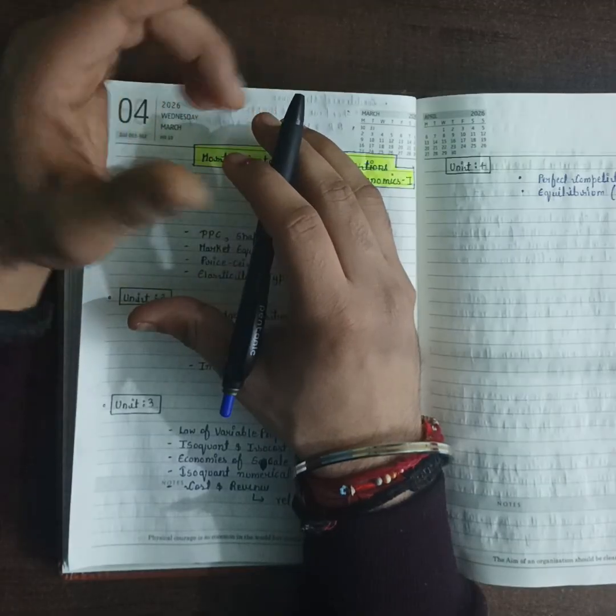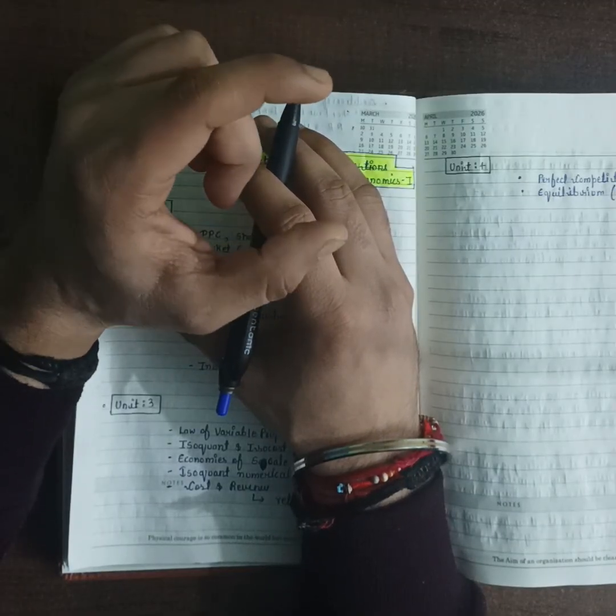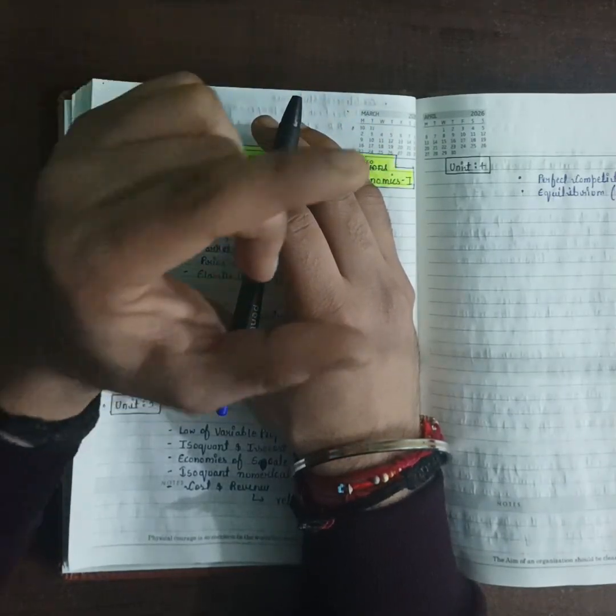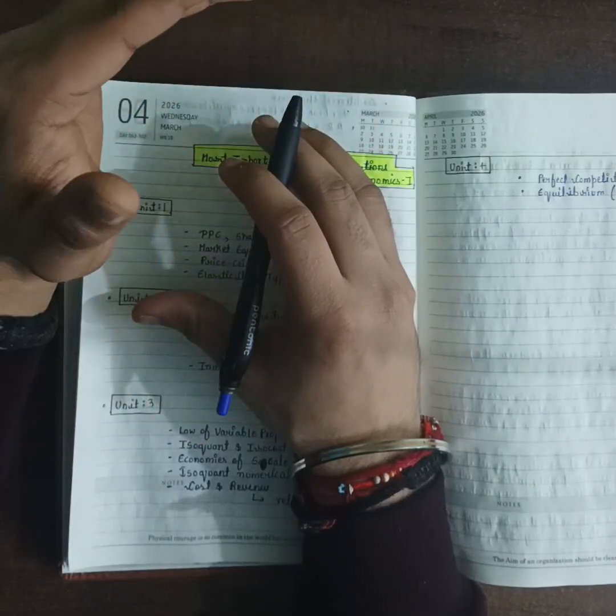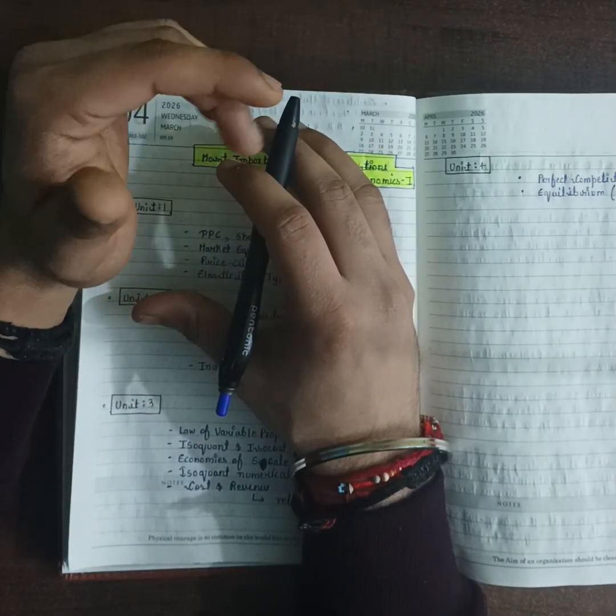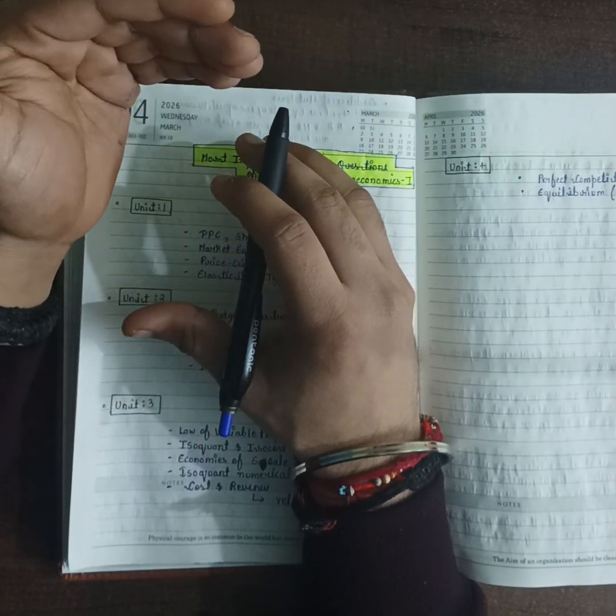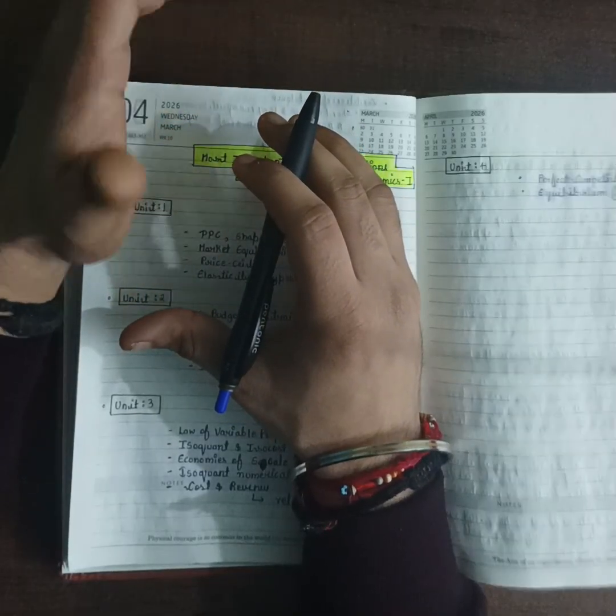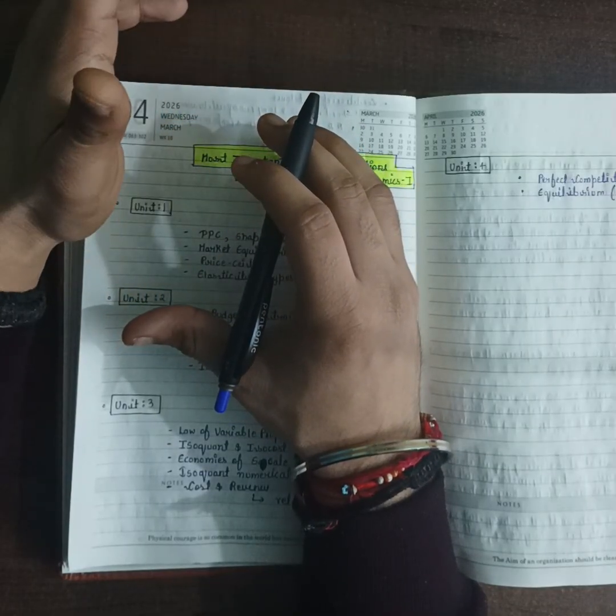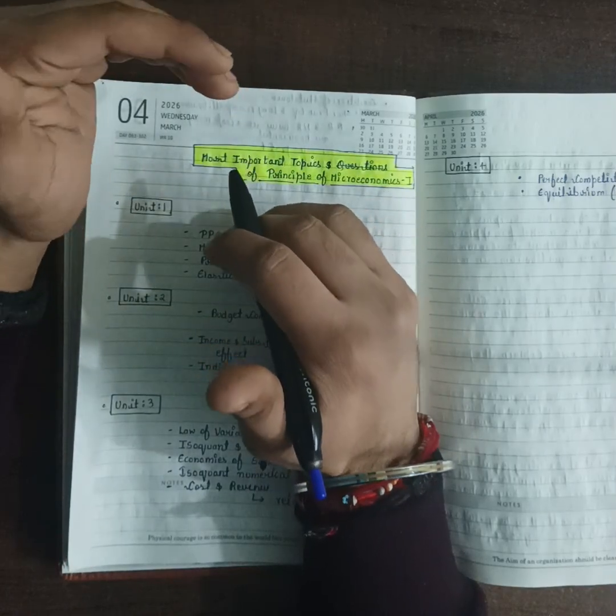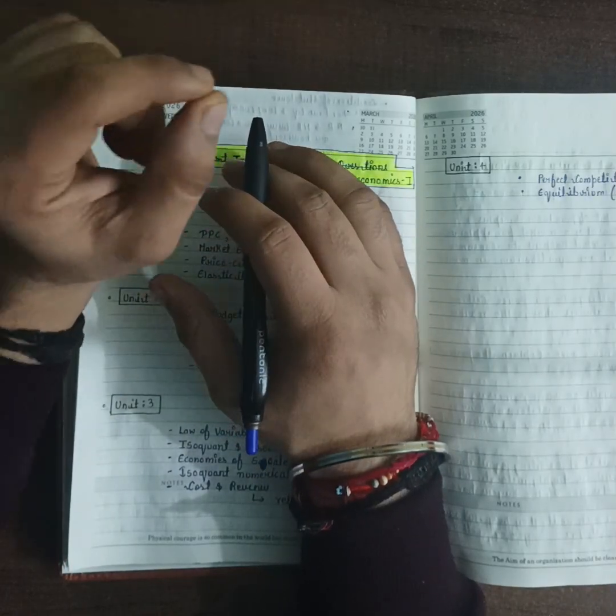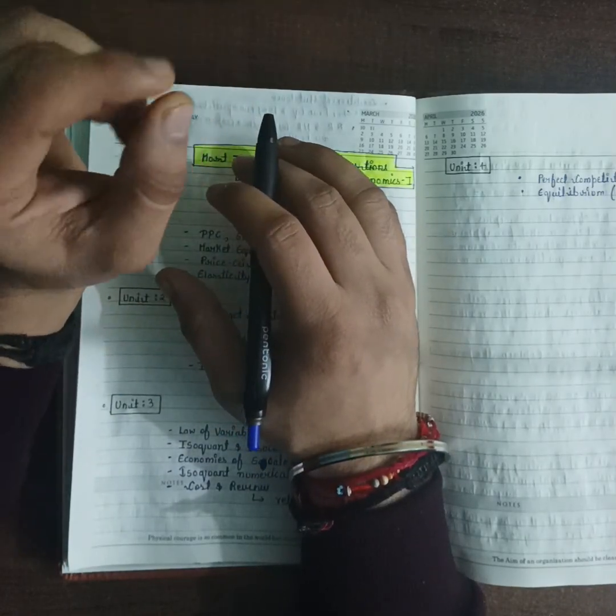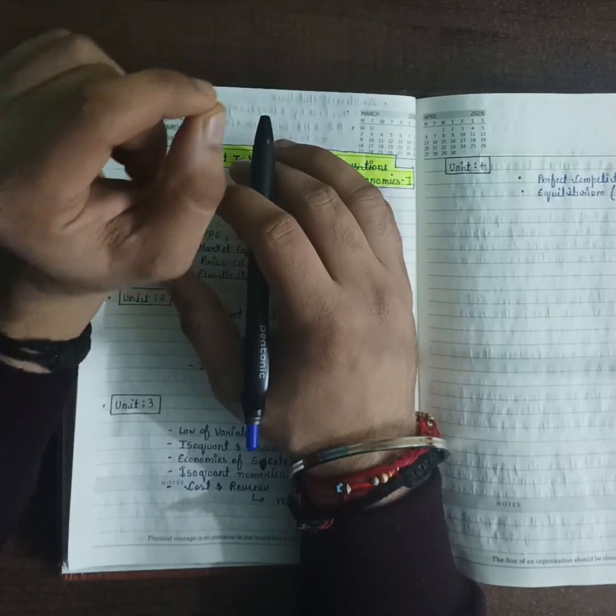Every concept has multiple subtopics within it. Please be cautious about the fact that if there is a topic like budget constraint, within budget constraint you have multiple subtopics. You need to study what is budget, how to make a budget, what is a budget line, change in budget line, shift in budget line - all these subtopics are inculcated within a specific topic.